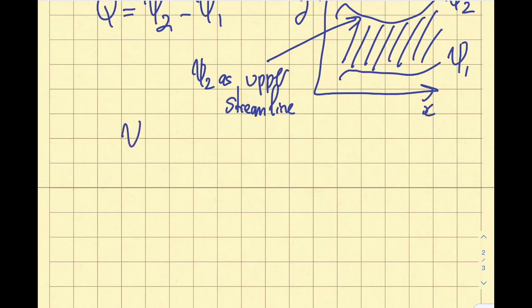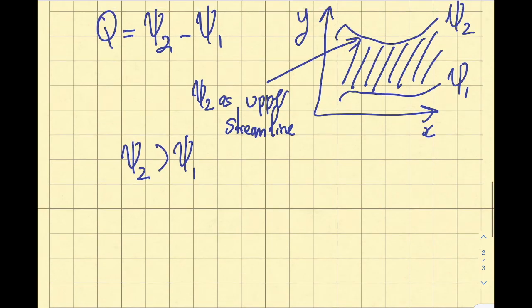If I am interested in the direction, if ψ₂ is larger than ψ₁, you can see from the Q equation that I'm going to get a positive Q value. This indicates going to the right. If ψ₁ is greater than ψ₂, I'm going to obtain a negative Q value. This simply indicates that the flow is going to the left.